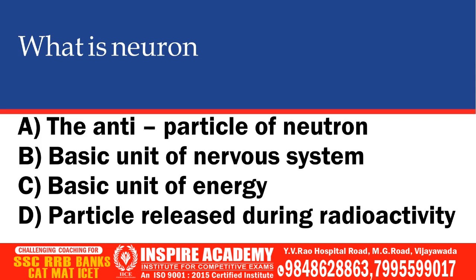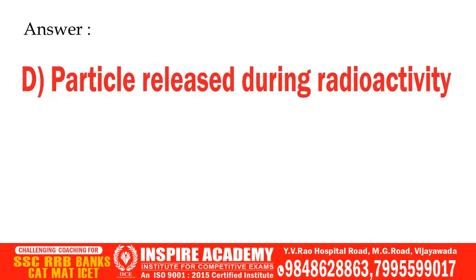What is a Neutrino? Options: the antiparticle of a neutron, basic unit of nervous system, basic unit of energy, or a particle released during radioactivity. The correct answer is a particle released during radioactivity.